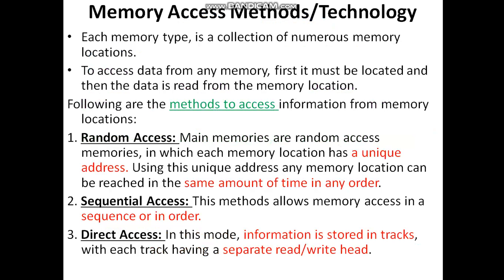The next topic is memory access methods and technologies. Memories will be considered as a number of memory locations, and those locations will be provided with some address value so the processor can access those memory locations with the help of these addresses, either reading data or writing data onto that memory location. The first access method is random access. In random access, memories have addresses corresponding to memory locations, and with the help of address decoding those memories can be accessed — there is no need for any order.